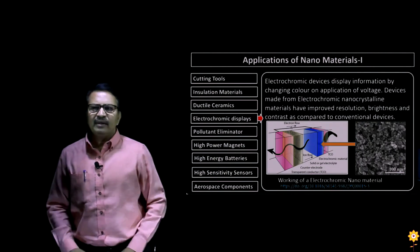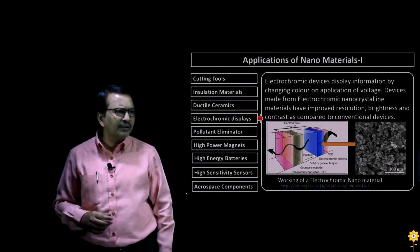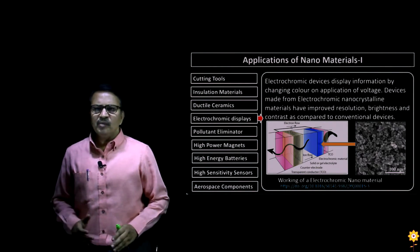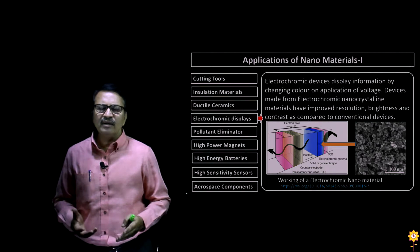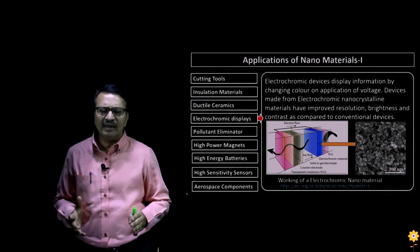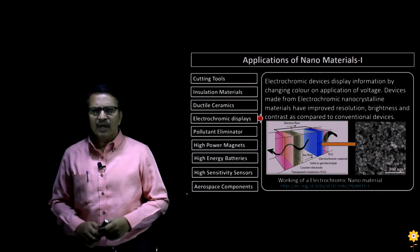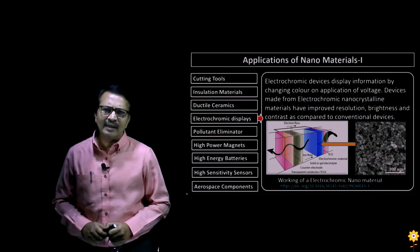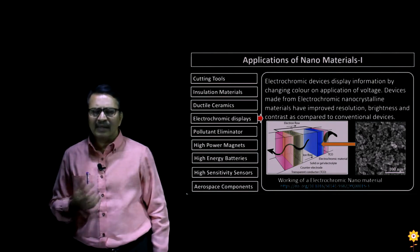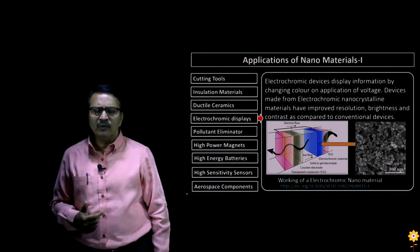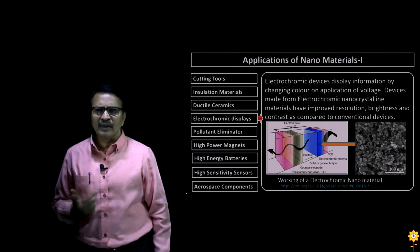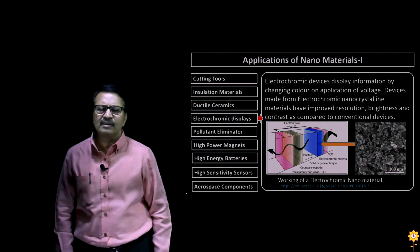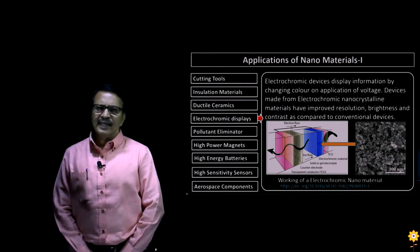We now move to the next application of nanomaterials — electrochromic materials or electrochromic displays. Electrochromic devices display information by changing color on the application of a voltage. If this electrochromic display device is made from a nanomaterial, then we have improved resolution, improved brightness, and also improved contrast as compared with conventional electrochromic devices.